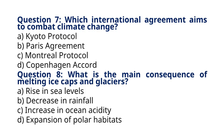Question 8: What is the main consequence of melting ice caps and glaciers? The correct answer to question 8 is option A: Rise in sea levels. Explanation: Melting ice caps and glaciers contribute to the rise in sea levels, which can lead to coastal flooding and erosion.